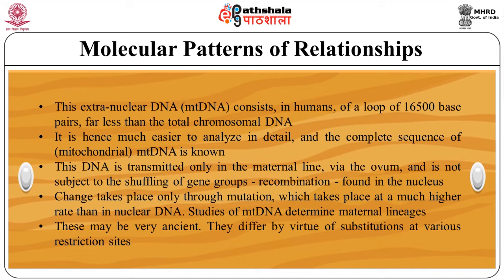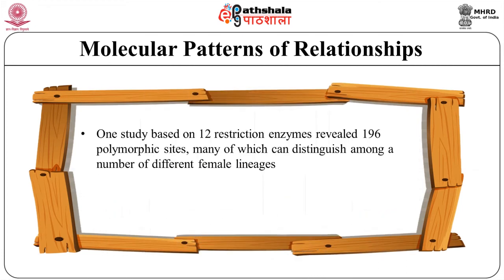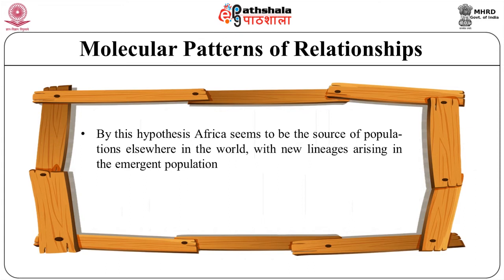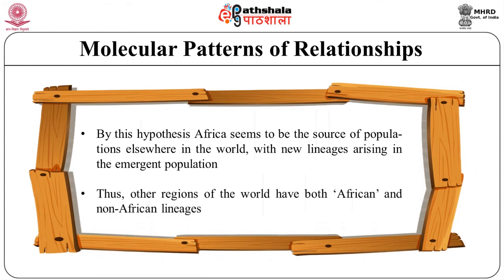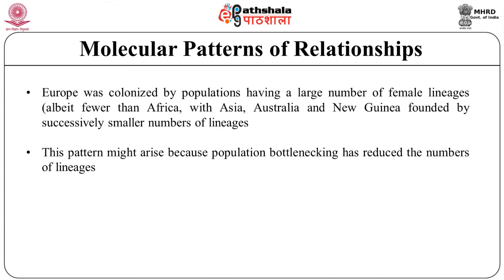These lineages may be very ancient. They differ by virtue of substitutions at various restriction sites. One study based on 12 restriction enzymes revealed 196 polymorphic sites, many of which can distinguish among a number of different female lineages. The largest number of different lineages occurs in Africa. By this hypothesis, Africa seems to be the source of populations elsewhere in the world, with new lineages arising in emergent populations. Thus, other regions of the world have both African and non-African lineages. Europe was colonized by populations having a large number of female lineages, albeit fewer than Africa, with Asia, Australia, and New Guinea founded by successively smaller numbers of lineages. This pattern might arise because population bottlenecking has reduced the number of lineages.